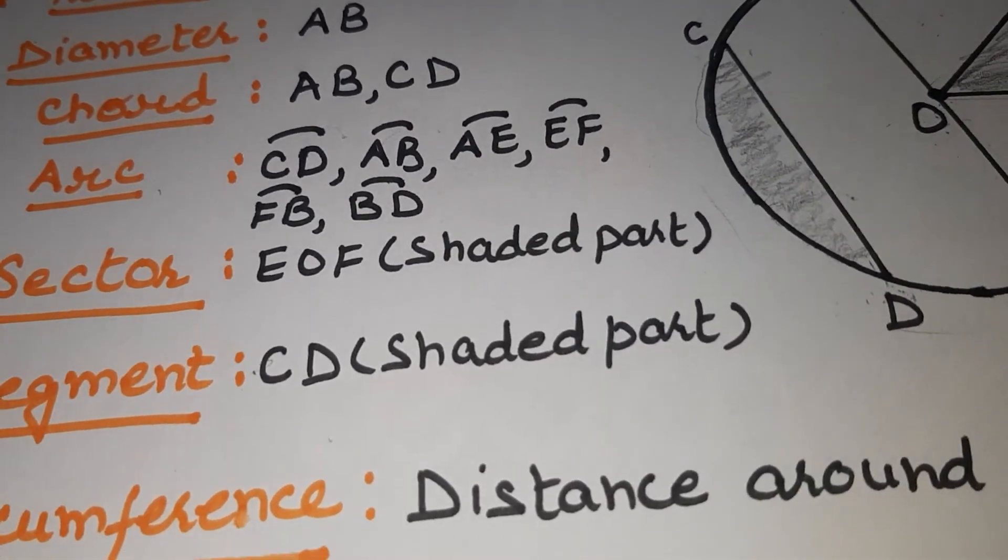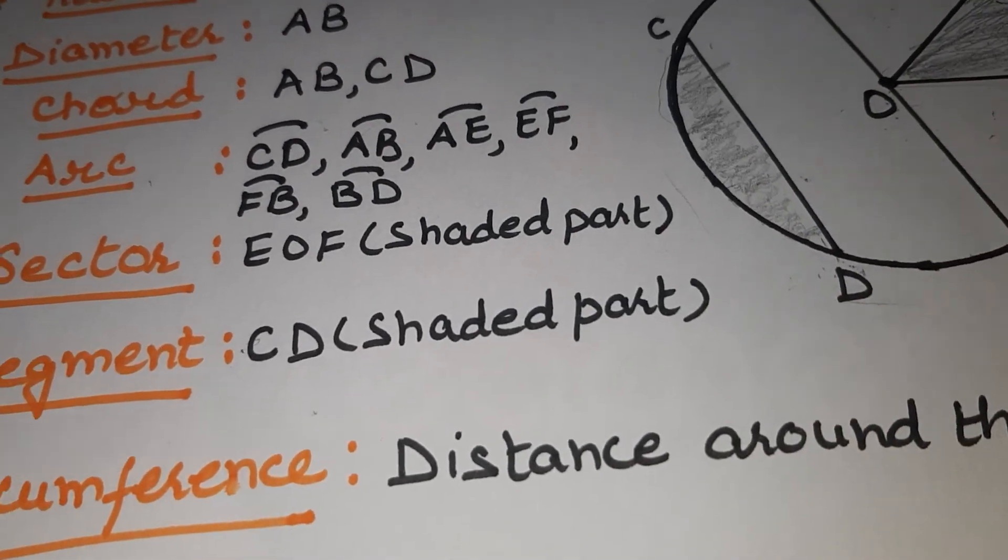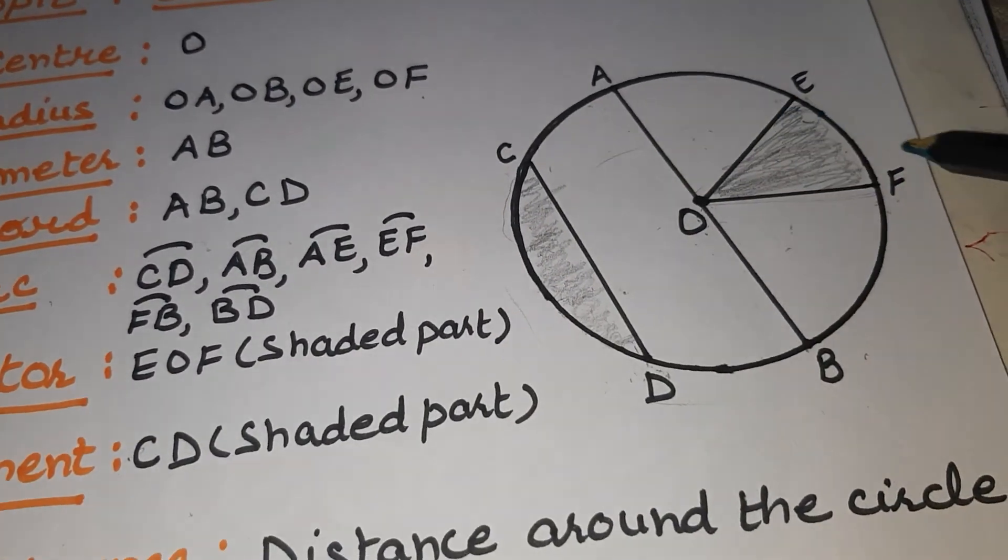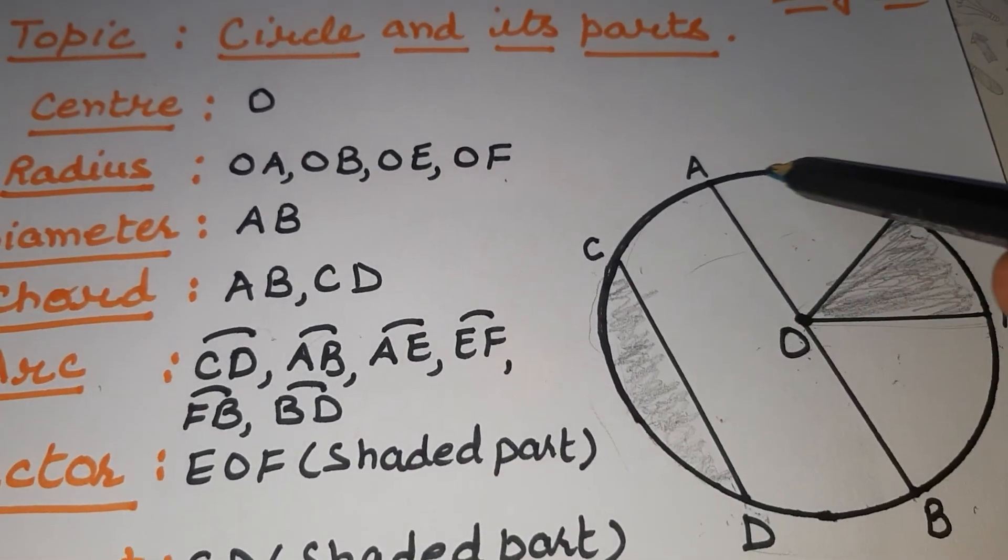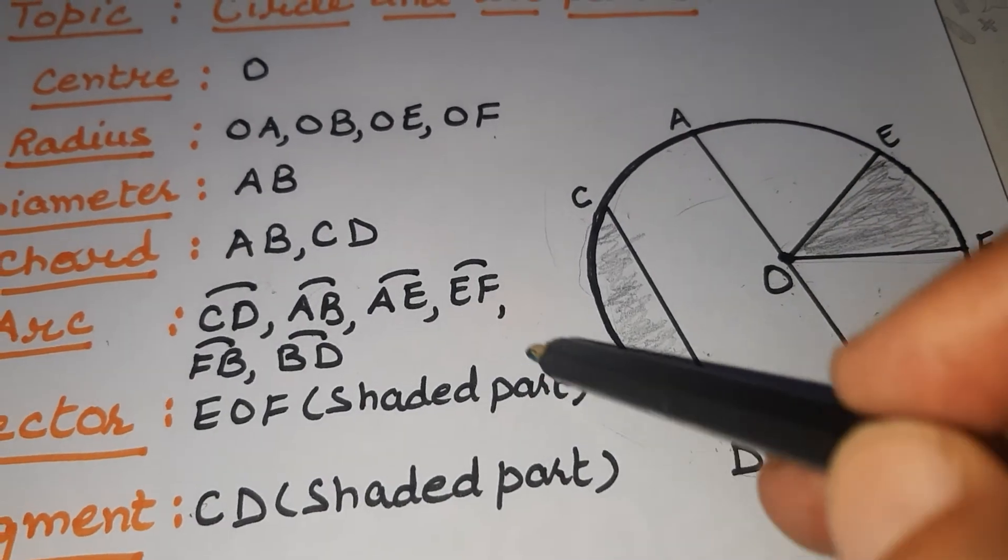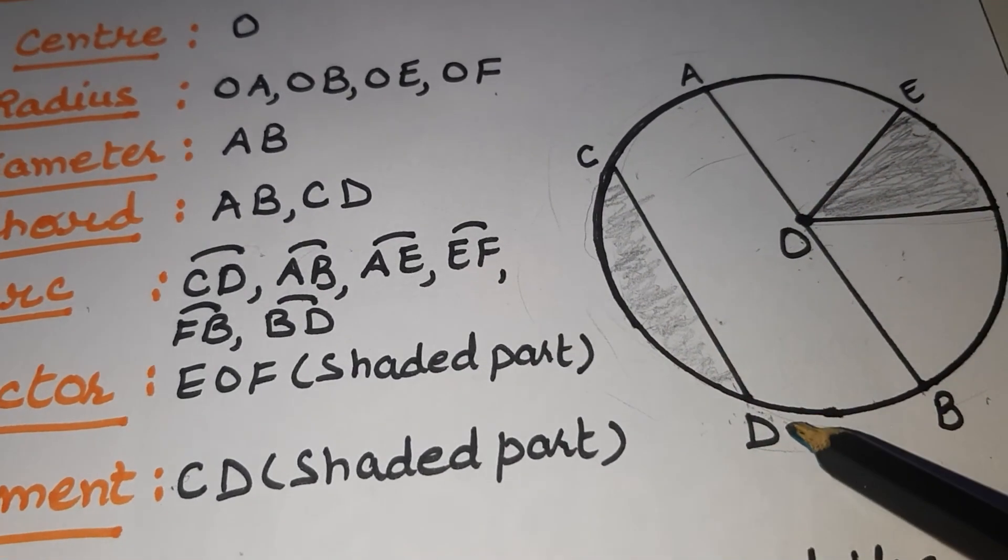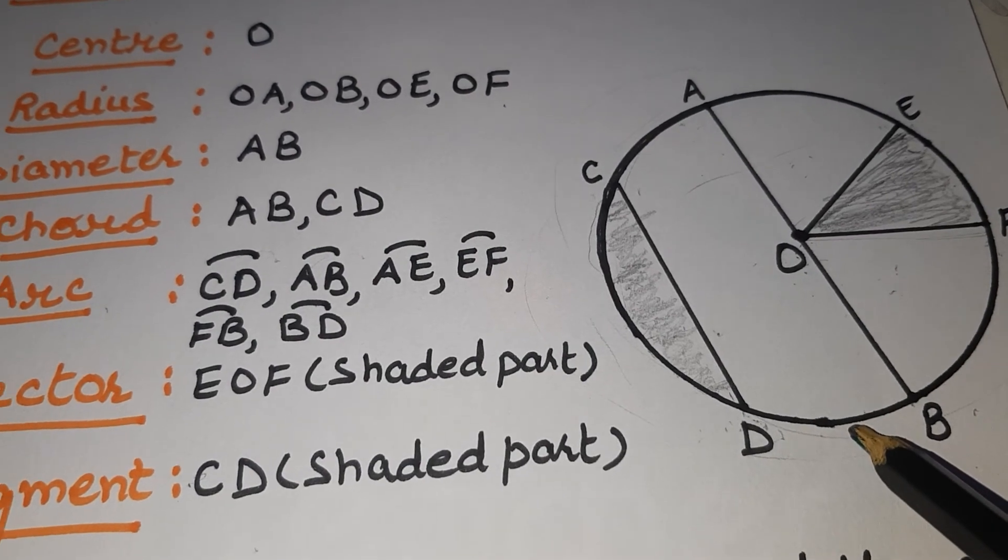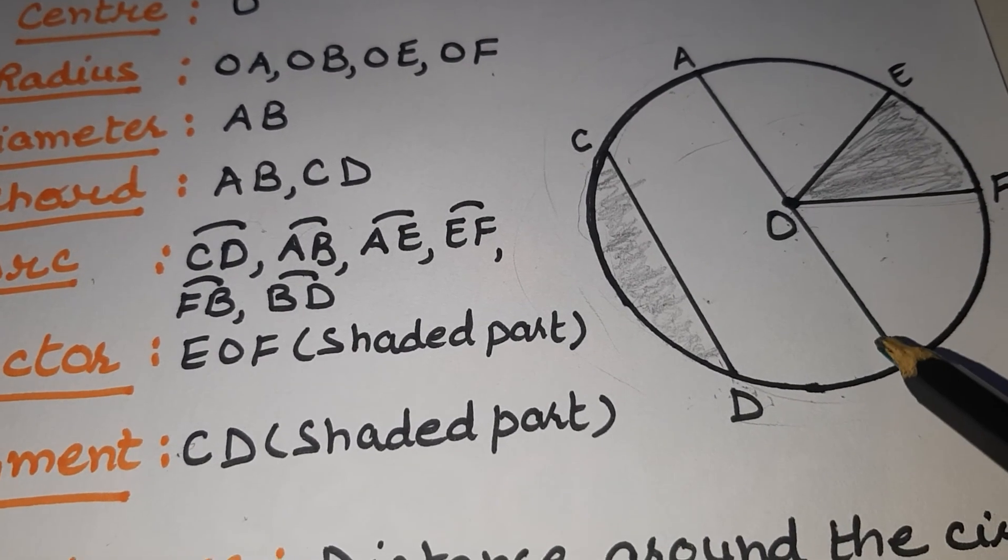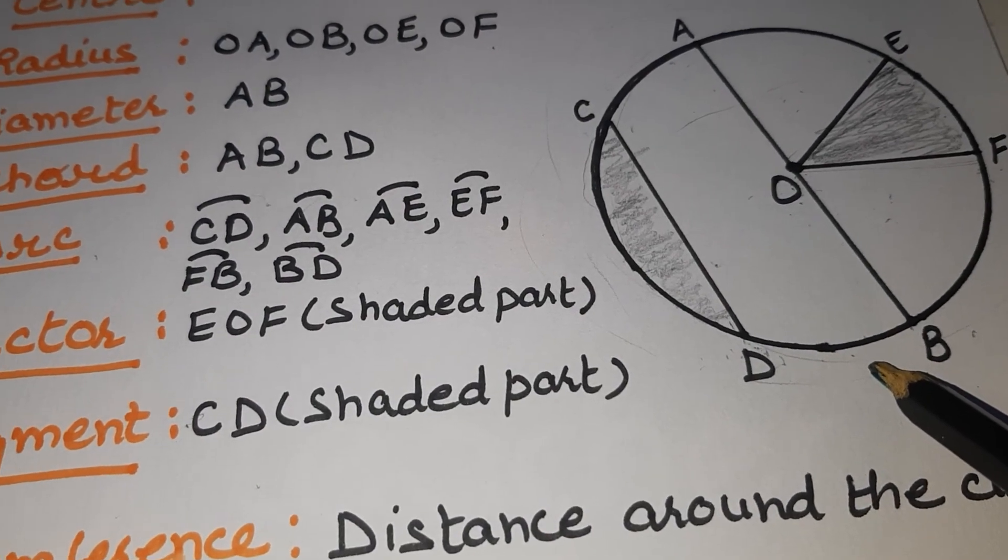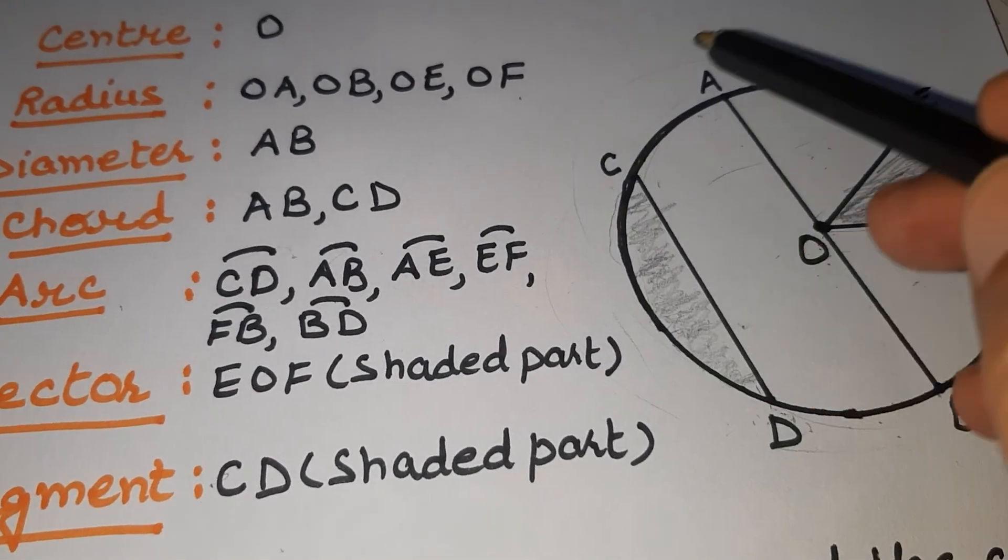Next term is circumference. What is circumference? The distance around the circle, this outer boundary. Length of outer boundary, this is called circumference of the circle. Like in rectangle and square you have done perimeter, so similarly in circle we call it circumference. Length of the circle.